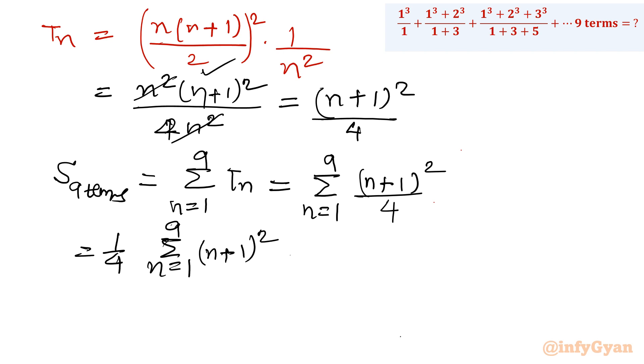Now I will put n value. So it will give us 1 by 4 in bracket. If I am putting n equal to 1, so 2 square, 1 plus 1 is 2, 2 square, n equal to 2, 3 square, n equal to 3, 4 square, n equal to 9, 10 square. Now you can see it is the numbers adding from 2 to 10. So what I am going to do here, I will simply add and subtract 1 square. So I will add here 1 square and then I will subtract here 1 square.